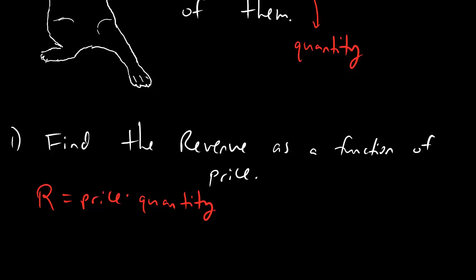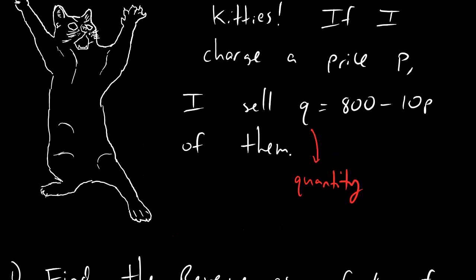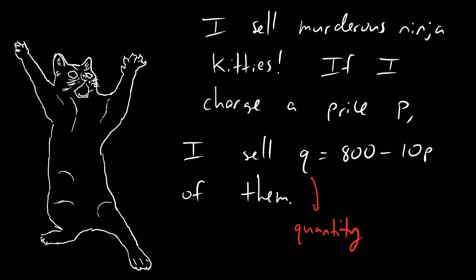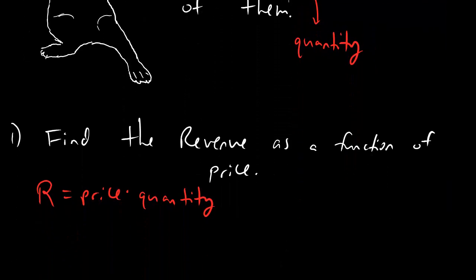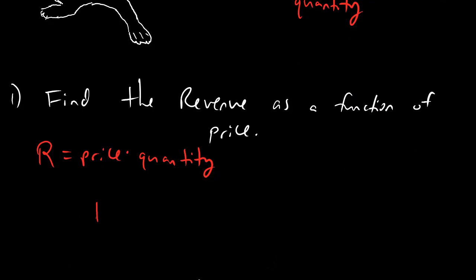But that's not what it's always going to look like. In this problem here, you can see right away that the variable they give you is price. So that's the variable we're working with, and right here they give you a formula for quantity. So when you're working with this equation, you're going to keep price as p and use the formula they give you for quantity.